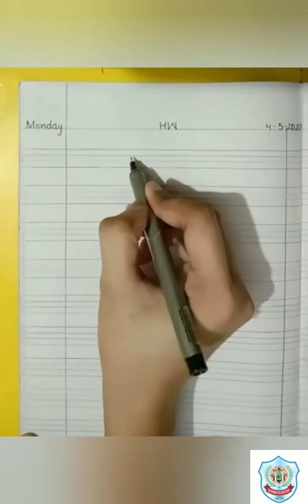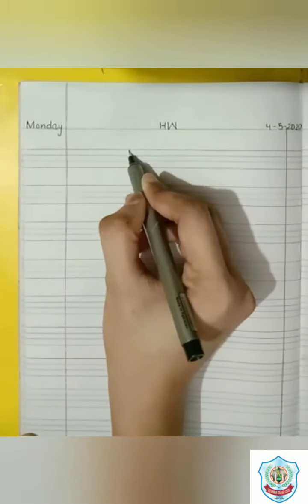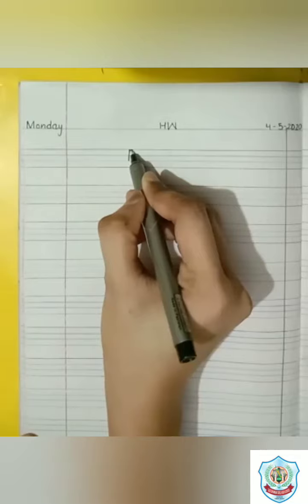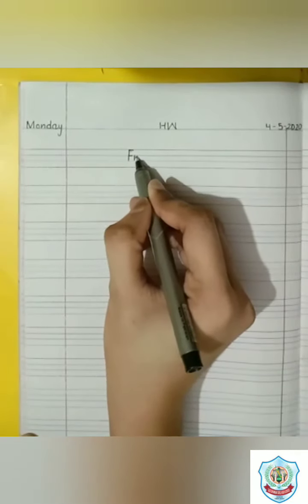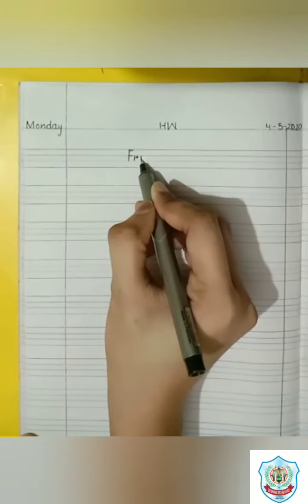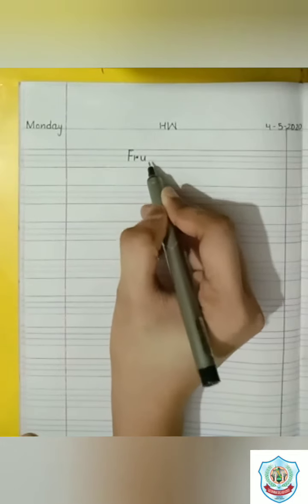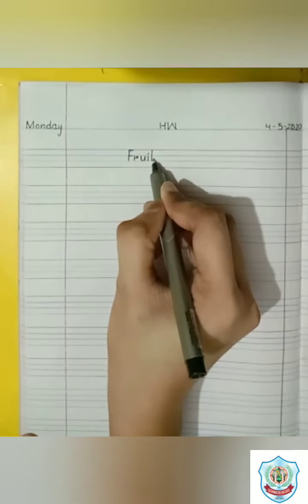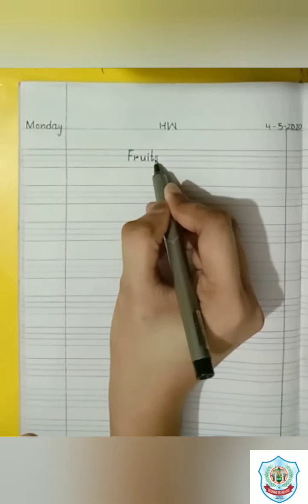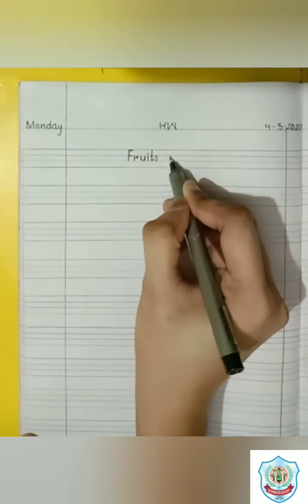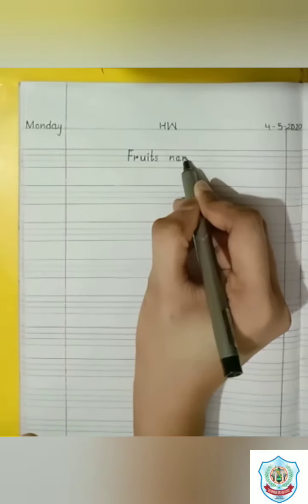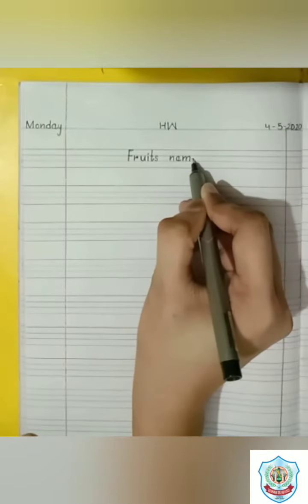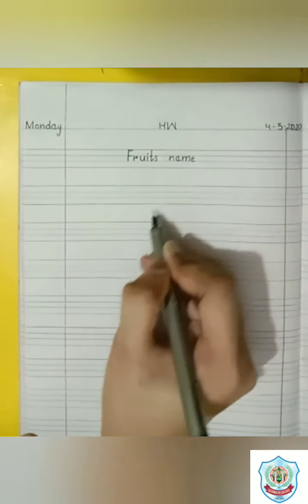Write statement. Fruits, F, R, U, I, T, S. Fruits, name. N, A, M, E, name.